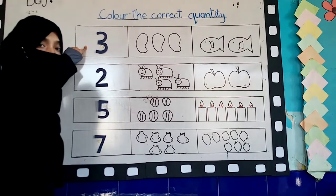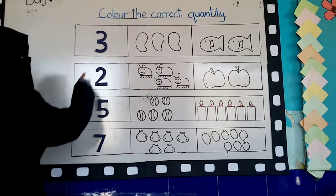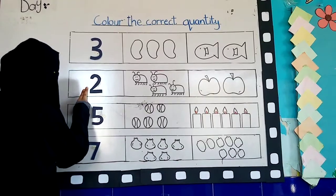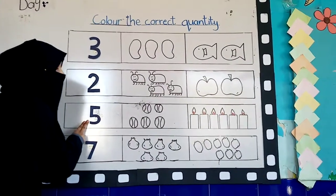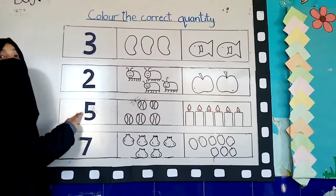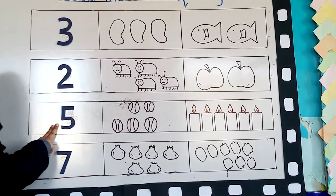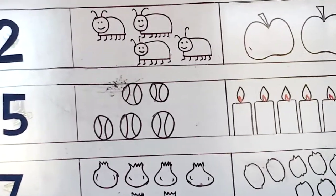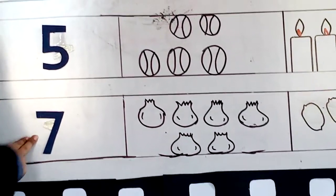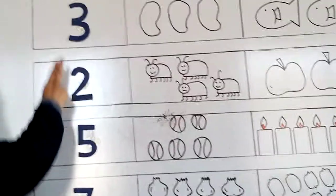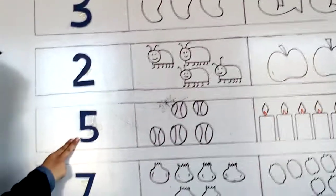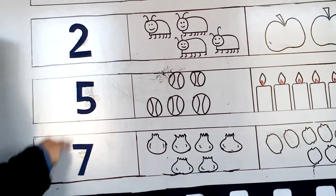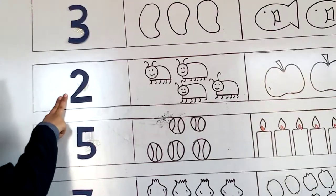Which number is this? Three. Which number is this? Two. Which number is this? Five. Which number is this? Seven. Now read them again: three, two, five, seven. Read it again: seven, five, two, three.